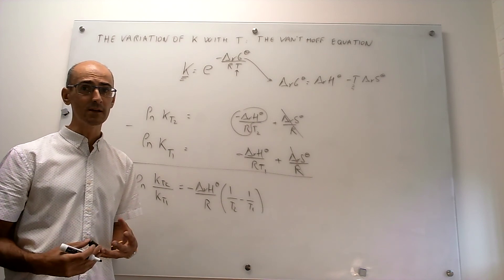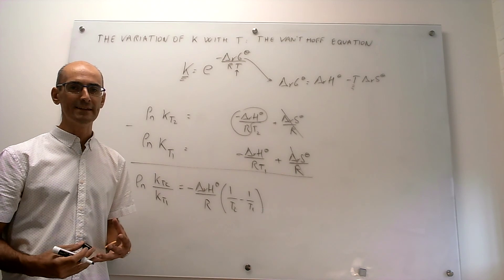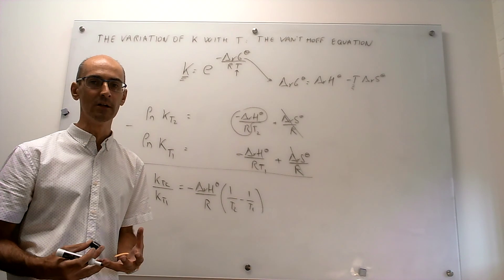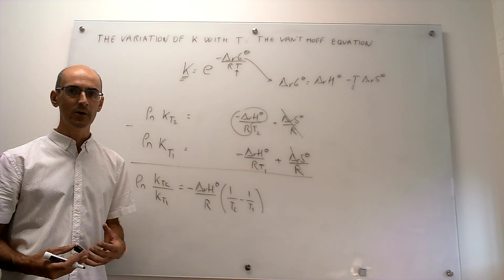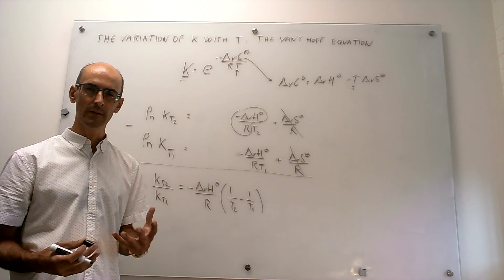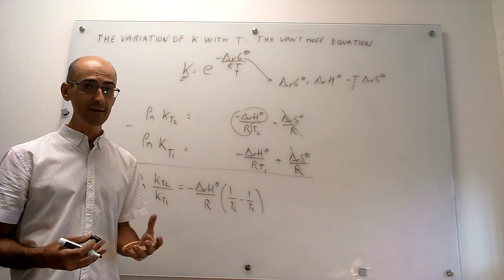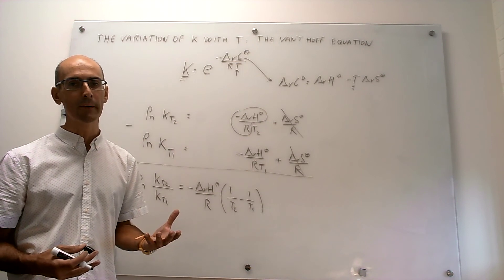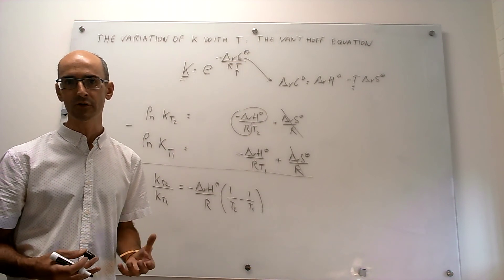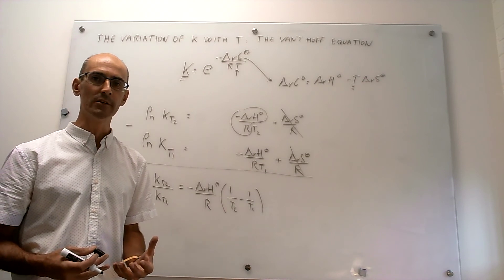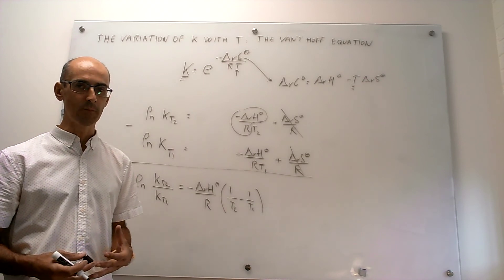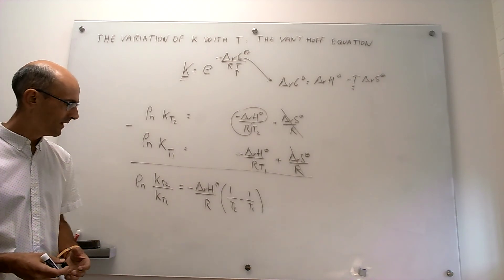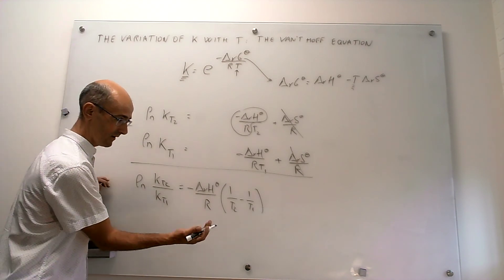The last thing to do in this video is to make sure that this equation bears out the expectations from Le Chatelier's principle reviewed in the last video. That discussion said that if you have an endothermic reaction and you increase the temperature, then the equilibrium constant should go up. But if you have an exothermic reaction and you increase the temperature, then the equilibrium constant should go down. Does the Van't Hoff equation bear out that expectation? The answer is yes — let's see how.